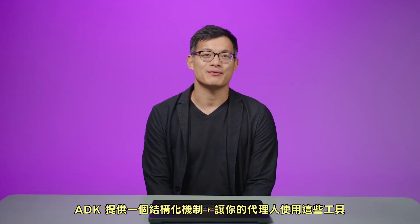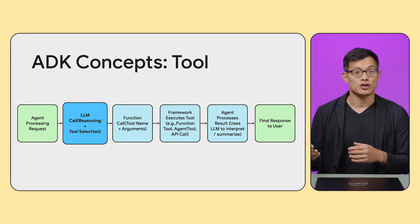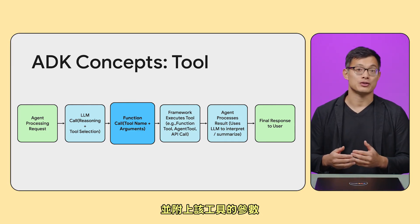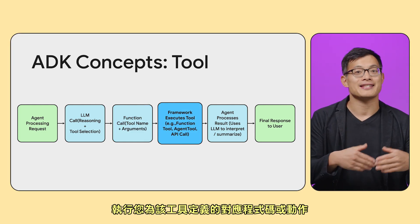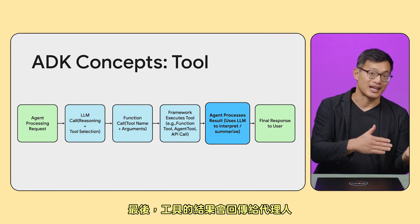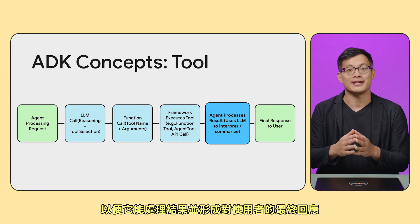ADK provides a structured mechanism for your agent to use these tools. The process generally looks like this: your agent receives a user request, the LLM analyzes it, determines if an external action is needed, and decides which registered tool to use along with the arguments for that tool. The ADK framework then intercepts this function call from the LLM, executes the corresponding code or action you've defined for that tool, and the tool's result is sent back to the agent — usually to the LLM again — so it can process the result and formulate the final response to the user. ADK abstracts this away, providing a clean interface for defining tools and handling that entire execution loop for you.